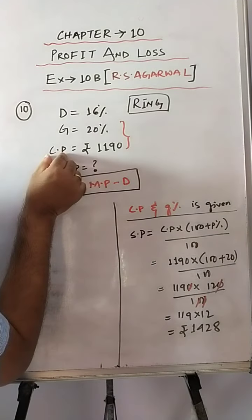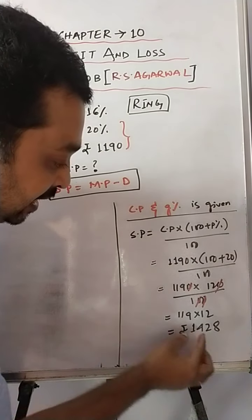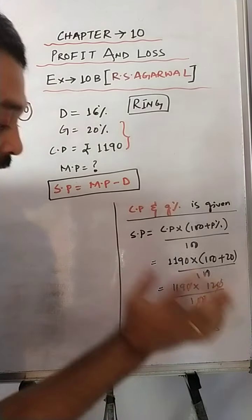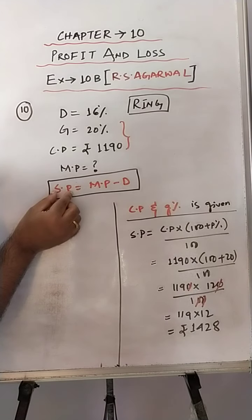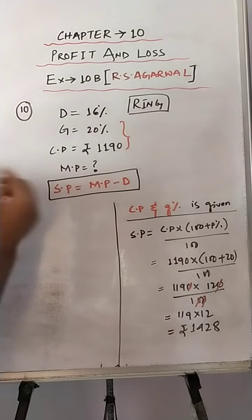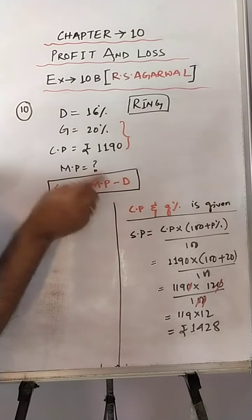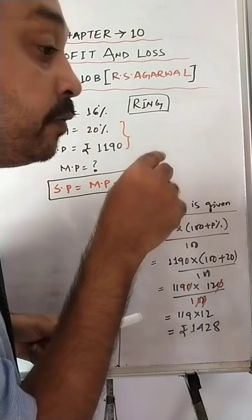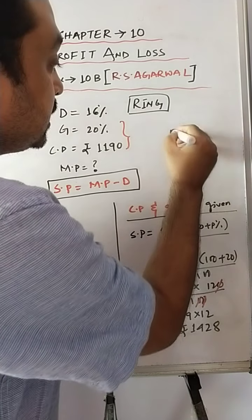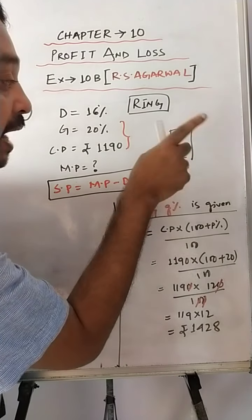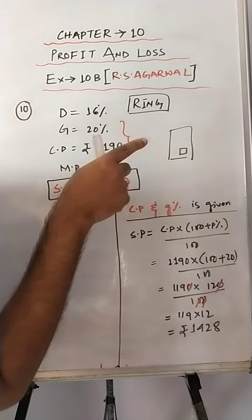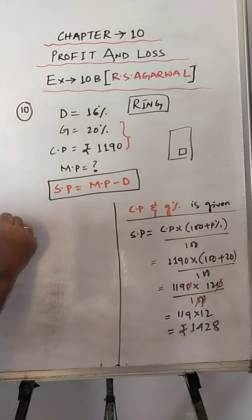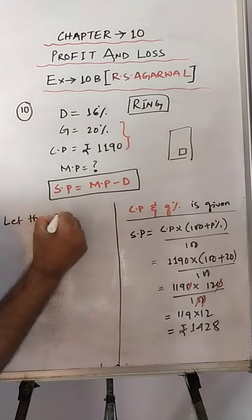He bought the ring at rupees 1190 and is selling it at rupees 1428, so he is definitely gaining — which confirms our value is correct. Now we have to find the mark price. SP is 1428, so that part is done. We are not aware of MP and discount. Until we know MP, we cannot know the discount, because discount is always given on the mark price — on the price written on the article.